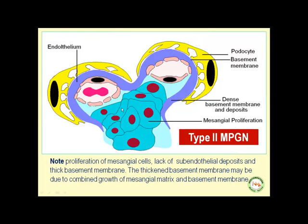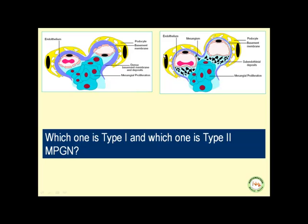Let's compare and contrast type 1 MPGN with type 2. In type 2, notice the characteristic thickened basement membrane with no mesangial deposits. Like type 1, the mesangial cells have greatly increased in size, and the thickened basement membrane has completely folded the distance between epithelial and endothelial cells. The picture on the left belongs to type 2 and the one on the right to type 1 MPGN.